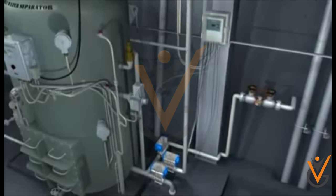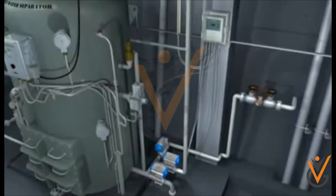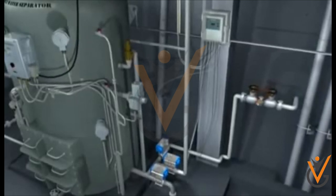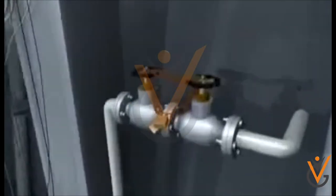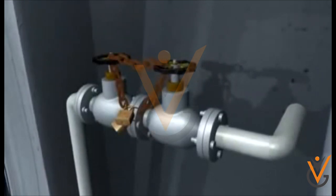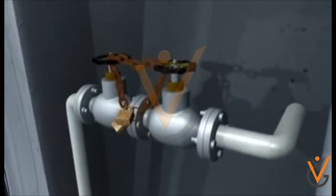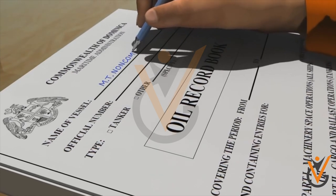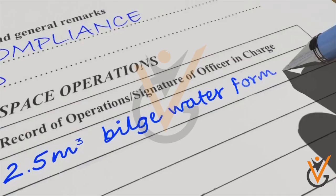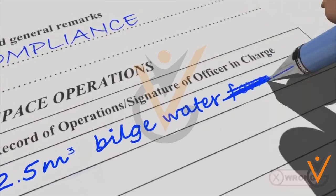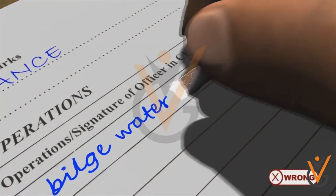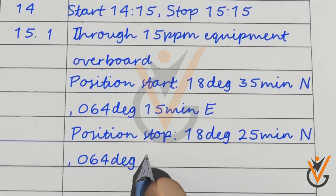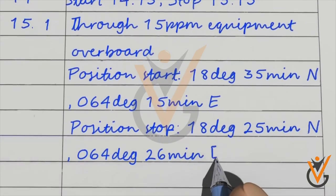When the operation of bilge water overboard is finished, the oil water separator overboard manual discharge valve is to be kept locked and the keys kept with the chief engineer. An entry is to be made in the oil record book by the chief engineer, along with the signature of the operating engineer, the chief engineer, and the master.